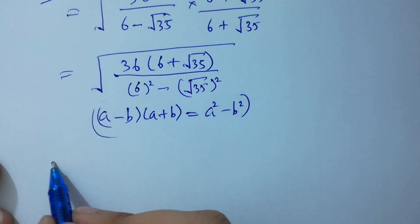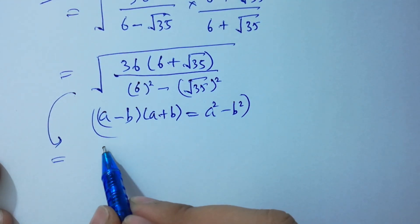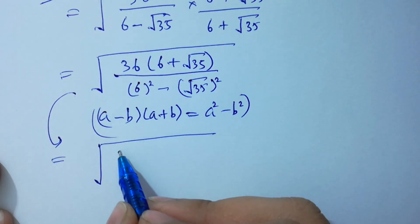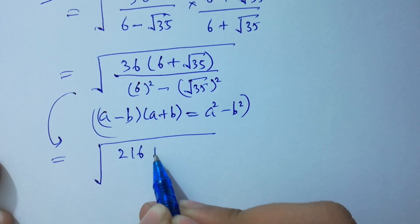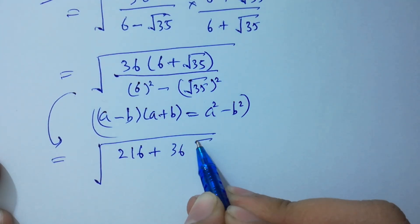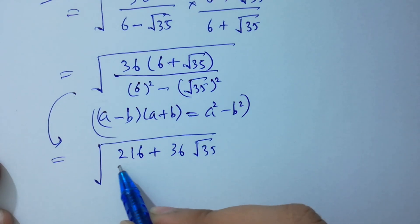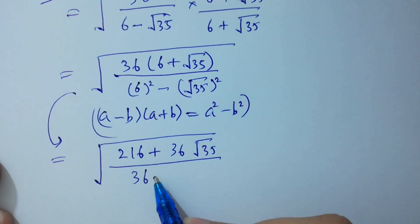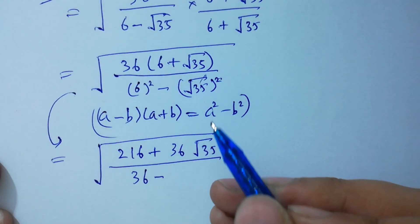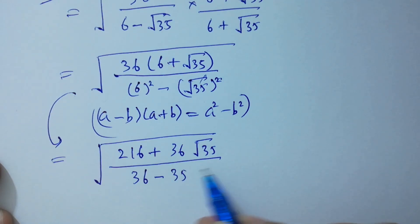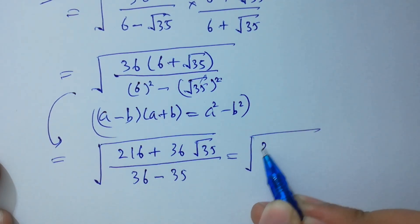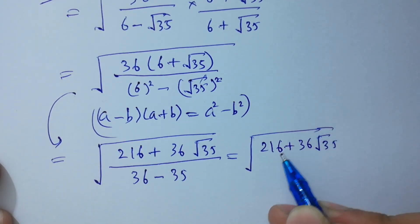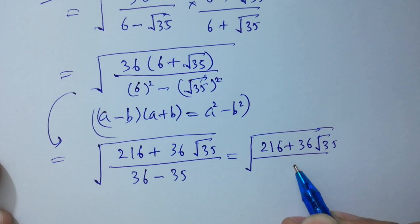We have square root of 36 times 6, which is 216, plus 36 times square root of 35 in the numerator. In the denominator, 6 times 6 is 36 minus 35, and the square and square root cancel, leaving 1. So we get 216 plus 36 square root of 35 over 1.